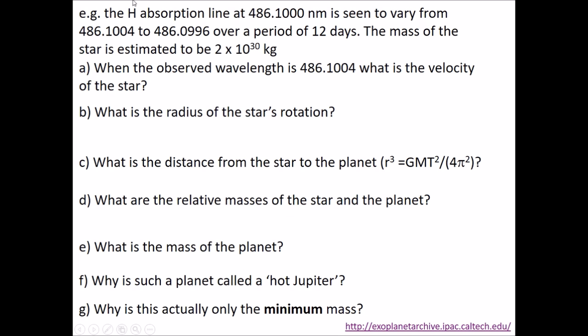Here's an example. We look at the hydrogen-Balmer absorption line at 486. In the laboratory on Earth this is 486.1000 nanometers, but we look from the star and find that it goes up to 1004, that's an increase in wavelength as it moves away from us, a Doppler shift, and then it goes down to 0.996 as it moves towards us. This takes 12 days and we estimate the mass of the star is 2×10^30 kg. We can do this by looking at its position on the HR diagram, the Hertzsprung-Russell diagram.